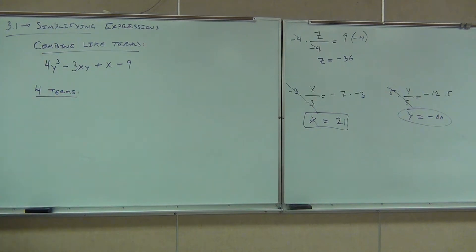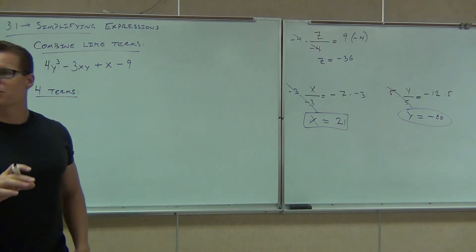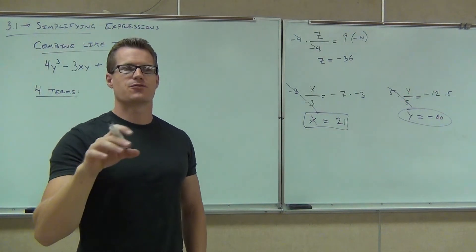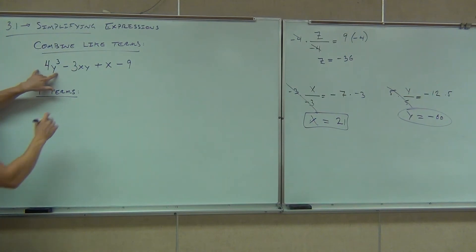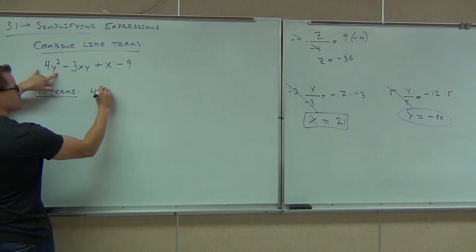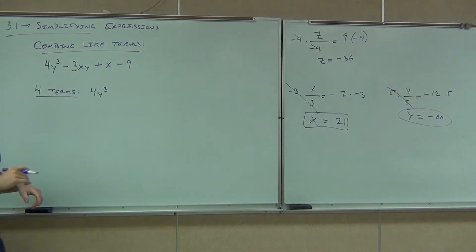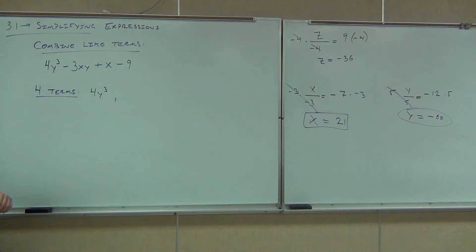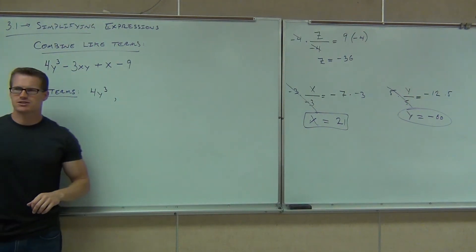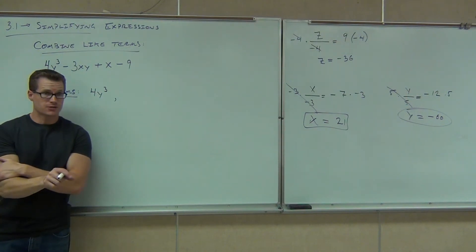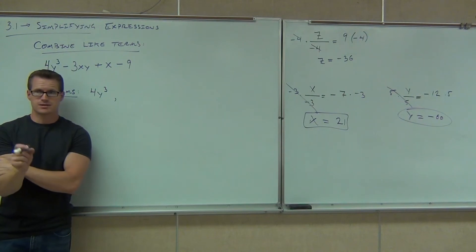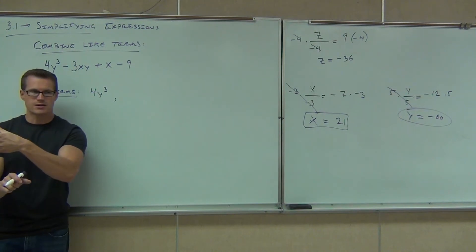We're going to list them out. I've got to tell you that the terms go with the sign that is in front of them. So let me do the first two examples for you. The first term that we have up here is 4y cubed. That's the first thing. So 4y cubed is a term. Can you tell me my next term? Now it goes with the sign in front of it. So notice how there's a sign in front of that 3xy. We're going to consider that to be a negative 3xy. It goes with that term. Are you with me on this?